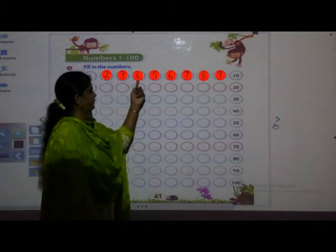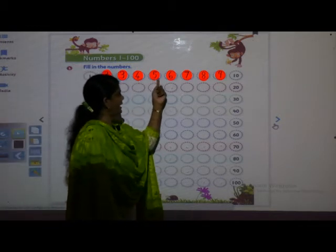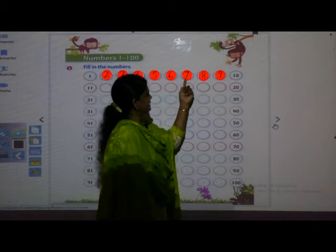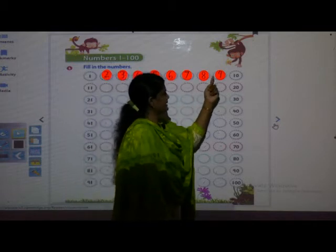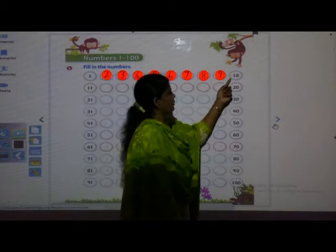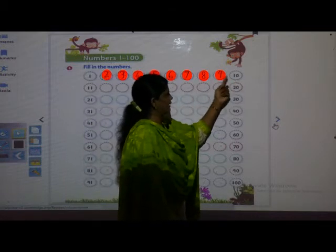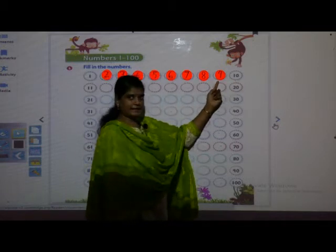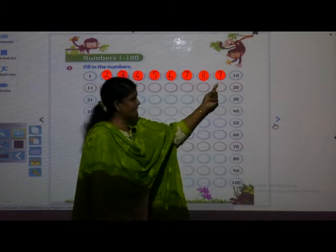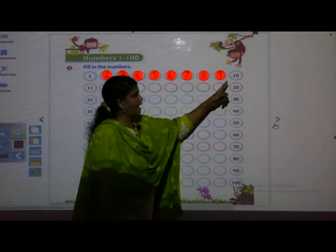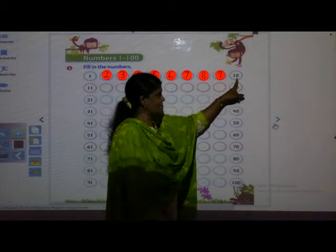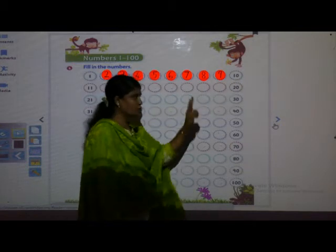Got it? So see: 1, 2, 3, 4, 5, 6, 7, 8, 9, 10. Nine is the big number. And 1, 0 — 10 is the two digit number. Next is 1, 1 — 11. After 11, which number will come? Anybody can tell me? After 10, you have to write 1, 2 — 12.